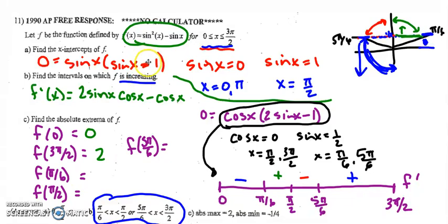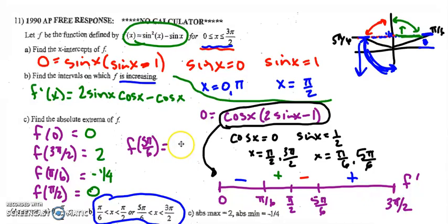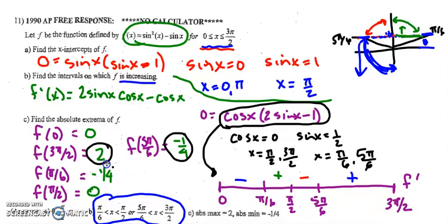f(π/6): sine of pi over six is one-half, so (1/2)² minus 1/2 = 1/4 minus 1/2 = negative one-fourth. f(π/2): sine of pi over two is one, so 1 minus 1 = 0. f(5π/6): sine of five pi over six is also one-half, so again we get negative one-fourth. Therefore the absolute maximum of f is 2, and the absolute minimum is negative one-fourth, which occurs at two x-values. Remember, the absolute extrema are y-values.